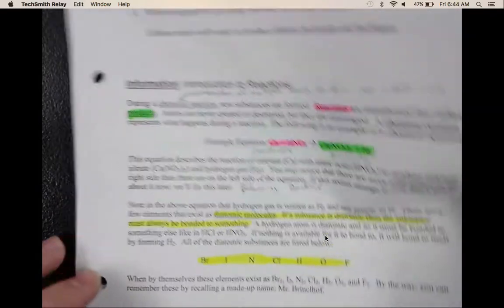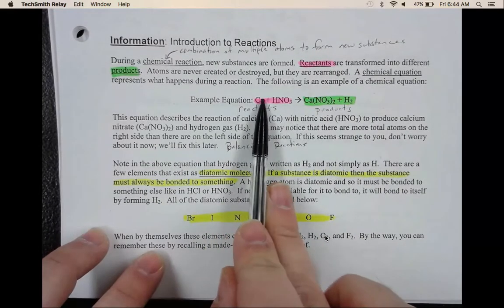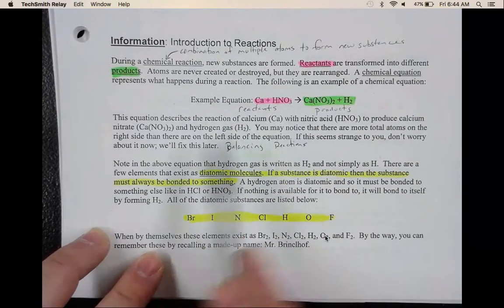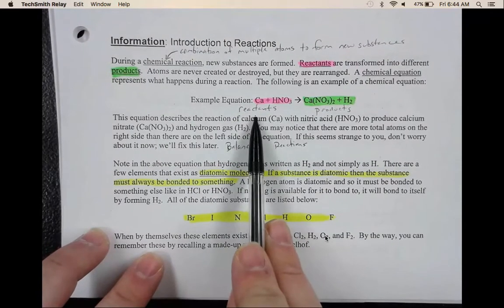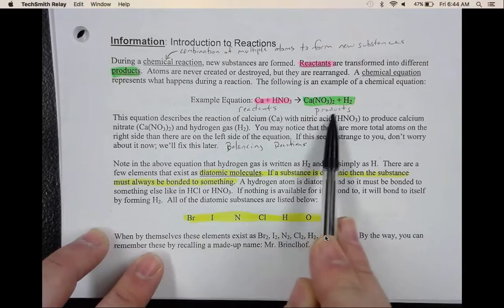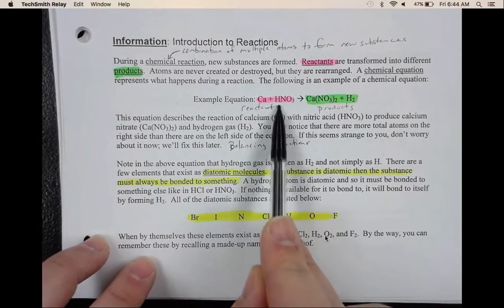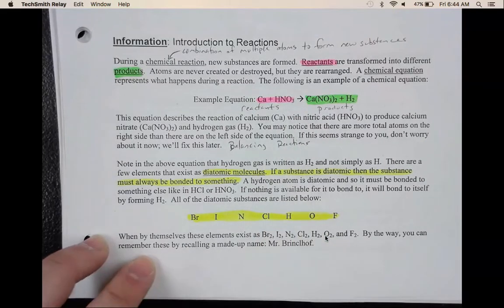So, a little bit more about this information. So the first thing, so this is an example of a chemical reaction. A couple of things I want to point out is that the reactants highlighted in pink are on the left side. The products highlighted in green are always on the right side. And when I say side, I mean the side of the arrow. So the reactants on the left side of the arrow, products on the right side of the arrow.